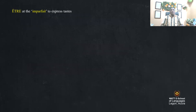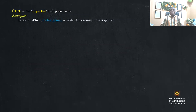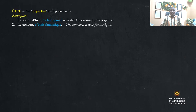Using 'être' in the imperfect and perfect tenses to express taste. For example, 'la soirée d'hier, c'était génial' (yesterday's evening was great) and 'le concert, c'était fantastique' (the concert was fantastic).